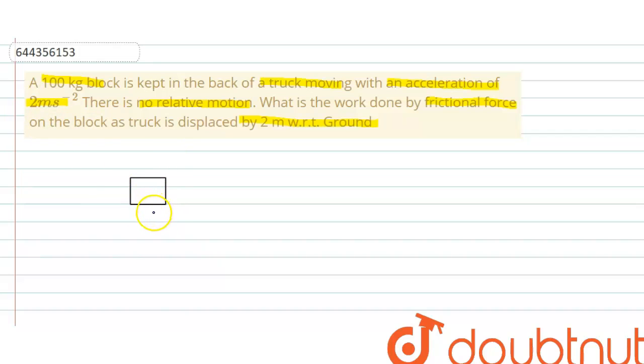Friction force required to move this block with truck. Friction force acts on the block in the direction in which the truck is moving and the block is also moving with same acceleration, 2 meter per second square, because there is no relative motion between truck and block.